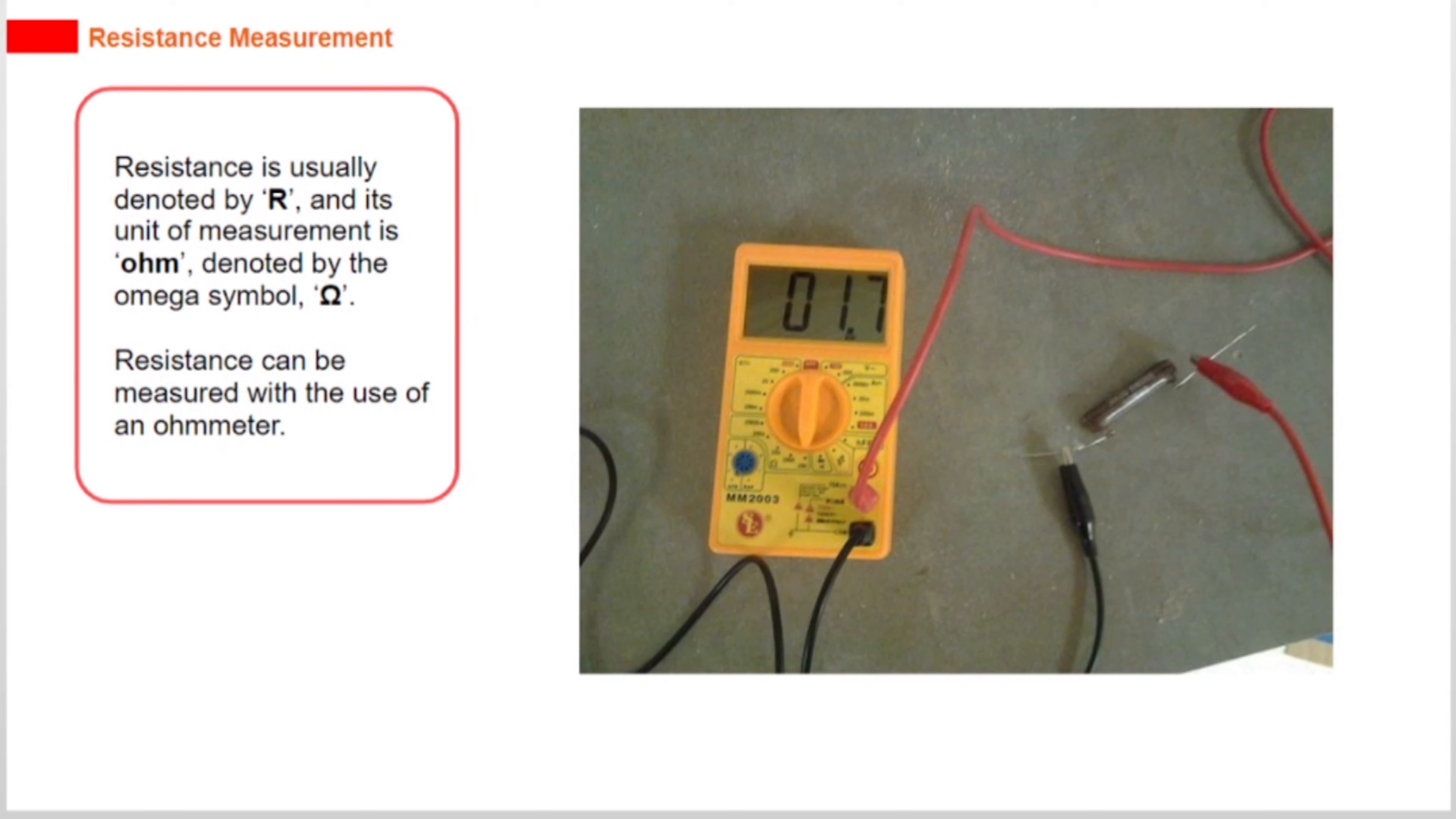Resistance is usually denoted by R, and its unit of measurement is ohm, denoted by the omega symbol Ω. Resistance can be measured with the use of an ohmmeter.